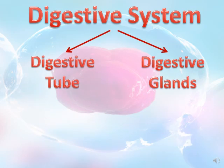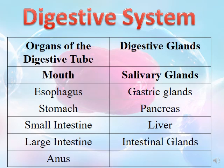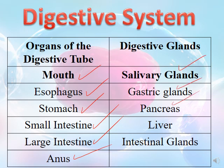The digestive system is divided into the digestive tube and digestive glands. The digestive tube consists of organs through which food passes, while digestive glands are organs through which food doesn't pass. Organs of the digestive tube are: the mouth, esophagus, stomach, small intestine, large intestine, and finally the anus, where excess food is excreted as waste. Digestive glands are: salivary glands, gastric glands, pancreas, liver, and intestinal glands.